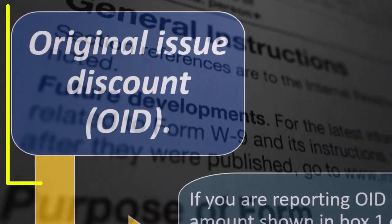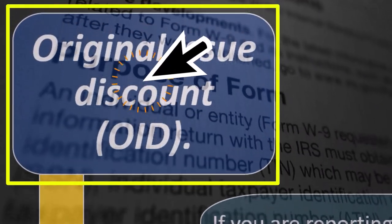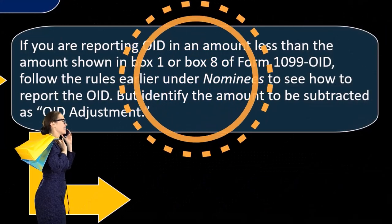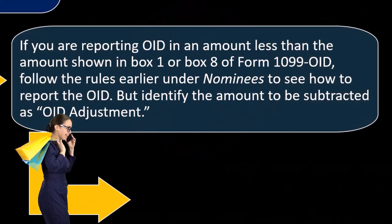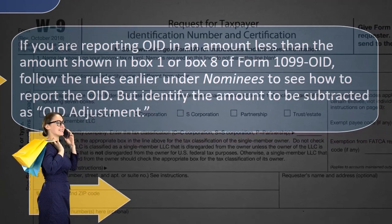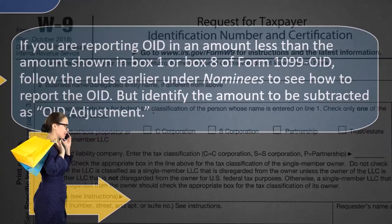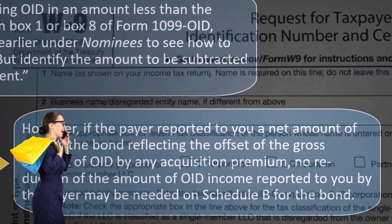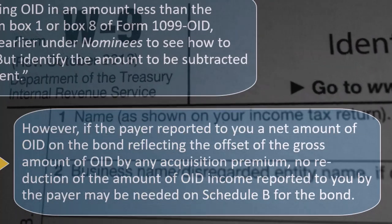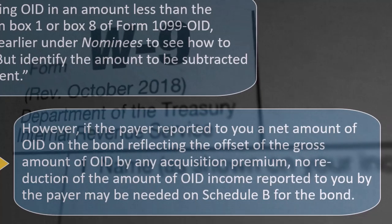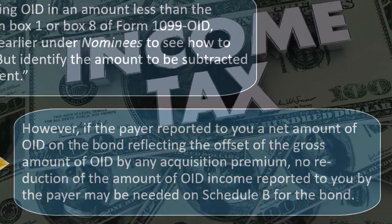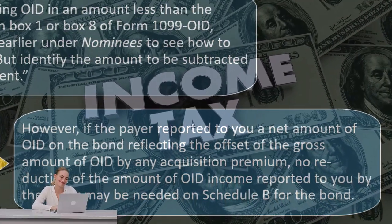Original issue discount — the OID. If you are reporting OID in an amount less than the amount shown in box one or box eight of form 1099-OID, follow the rules under nominees to see how to report the OID, but identify the amount to be subtracted as an OID adjustment. We've got to tie into what's on the 1099 and show the work and detail so we don't confuse the IRS, because a confused IRS causes problems with our tax return.